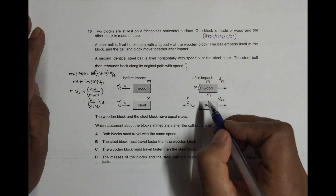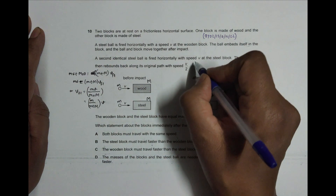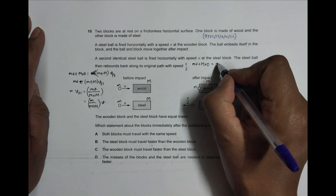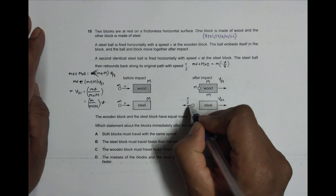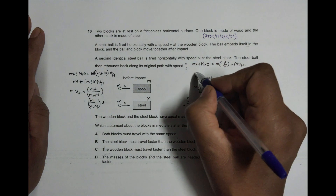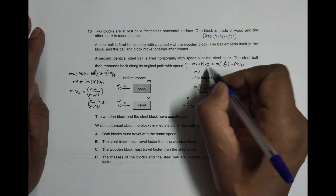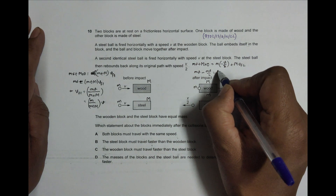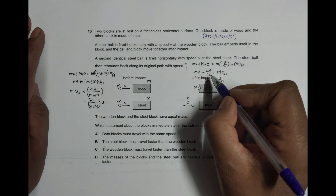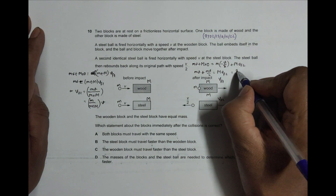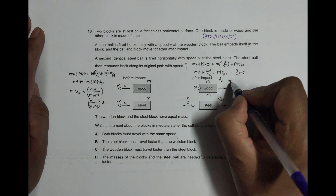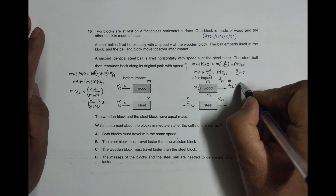For the second collision with the steel block: mV + M×0 = M×(−V/2) + M×V_f2, since the ball rebounds back along the same path with speed V/2. Rearranging: mV + mV/2 = M×V_f2, giving (3/2)mV = M×V_f2, so V_f2 = (3/2)(m/M)×V.